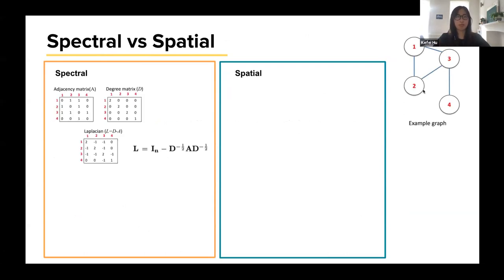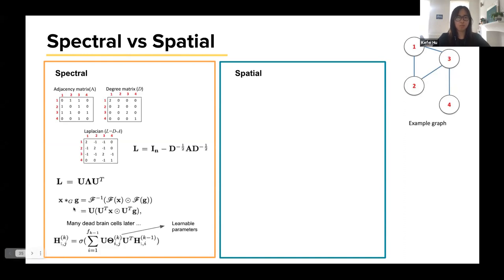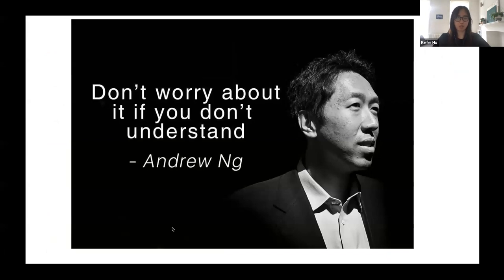This is our example graph. As you can see, spectral generates the Laplacian using this formula, and then it normalizes the Laplacian matrix, which is then followed by an eigen decomposition of this Laplacian matrix to obtain a set of orthonormal eigenbasis. Then it performs Fourier transformation of the node features. G here represents a set of learnable weights. Basically, many complicated math operations. We don't need to worry about that. Eventually, you would arrive at this expression. But seriously, do not worry, because you will see why spectral is no longer a preferred approach.